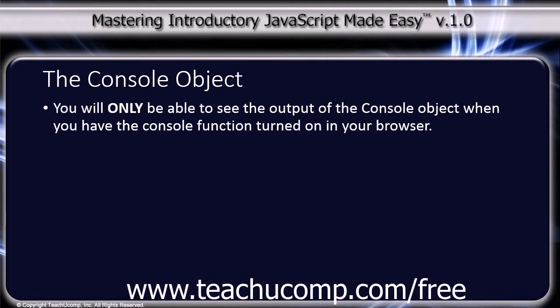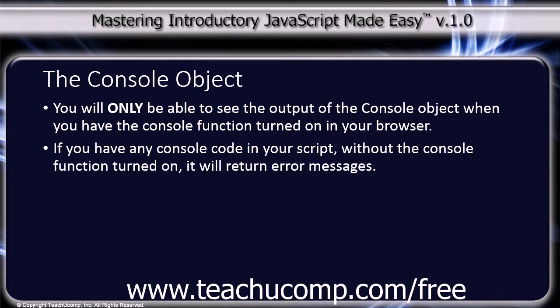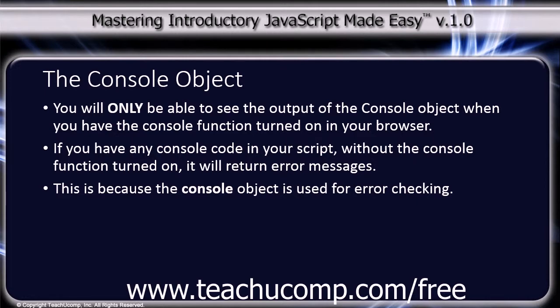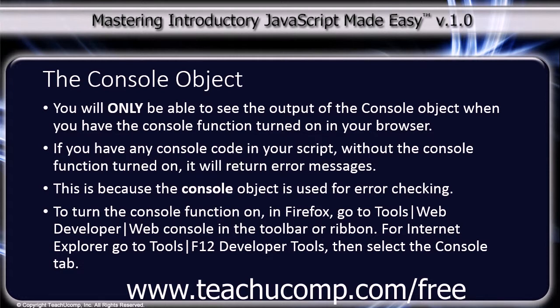You will only be able to see the output of the console object when you have the console function turned on in your browser. If you have any console code in your script without the console function turned on, it will return error messages. This is because the console object is used for error checking. To turn on the console function in Firefox, go to Tools, Web Developer, and then Web Console in the toolbar. For Internet Explorer, go to Tools, F12 Developer Tools, and then select the Console tab from your toolbar.